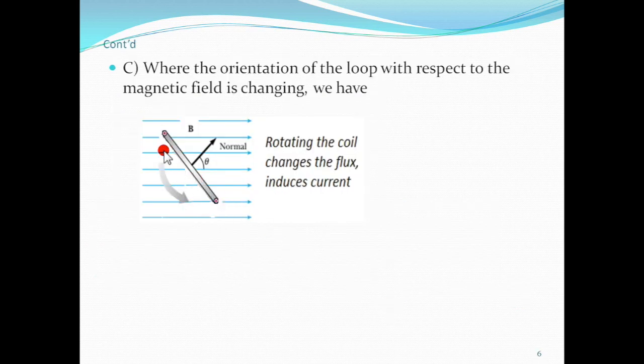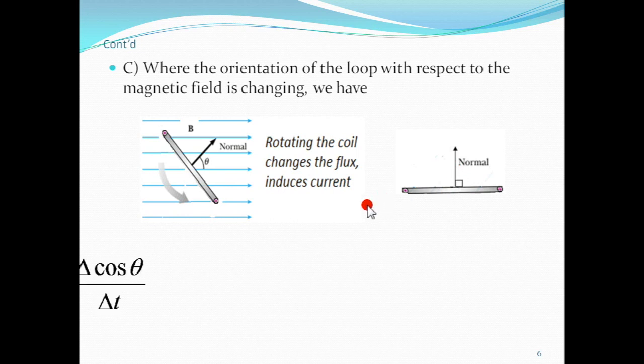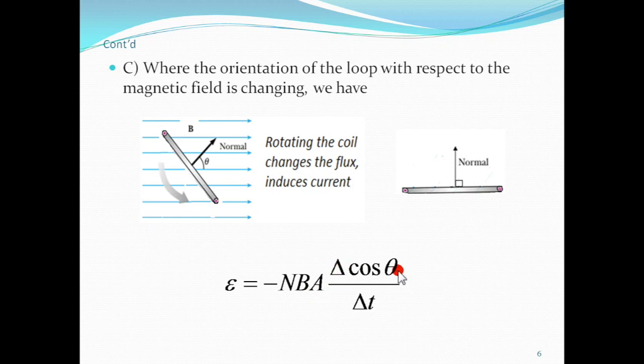The third possibility is the coil orientation. The coil is oriented at angle theta to the magnetic field normal. The coil rotates and the angle theta changes. The angle is rotating and the derivative is delta cos theta over delta theta.